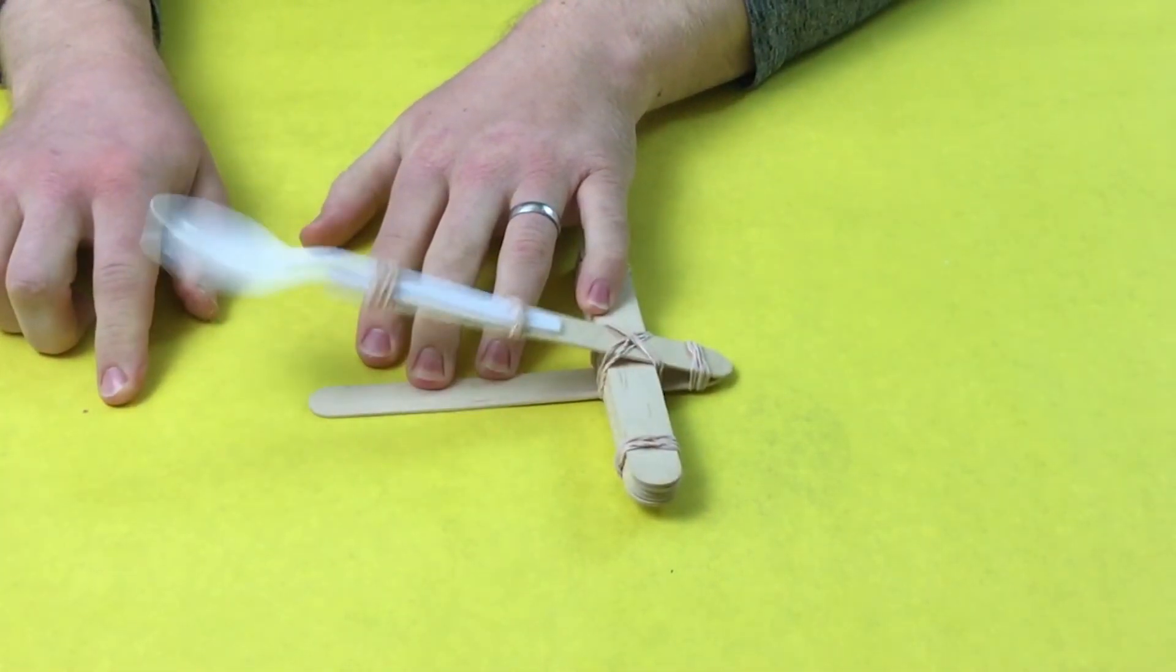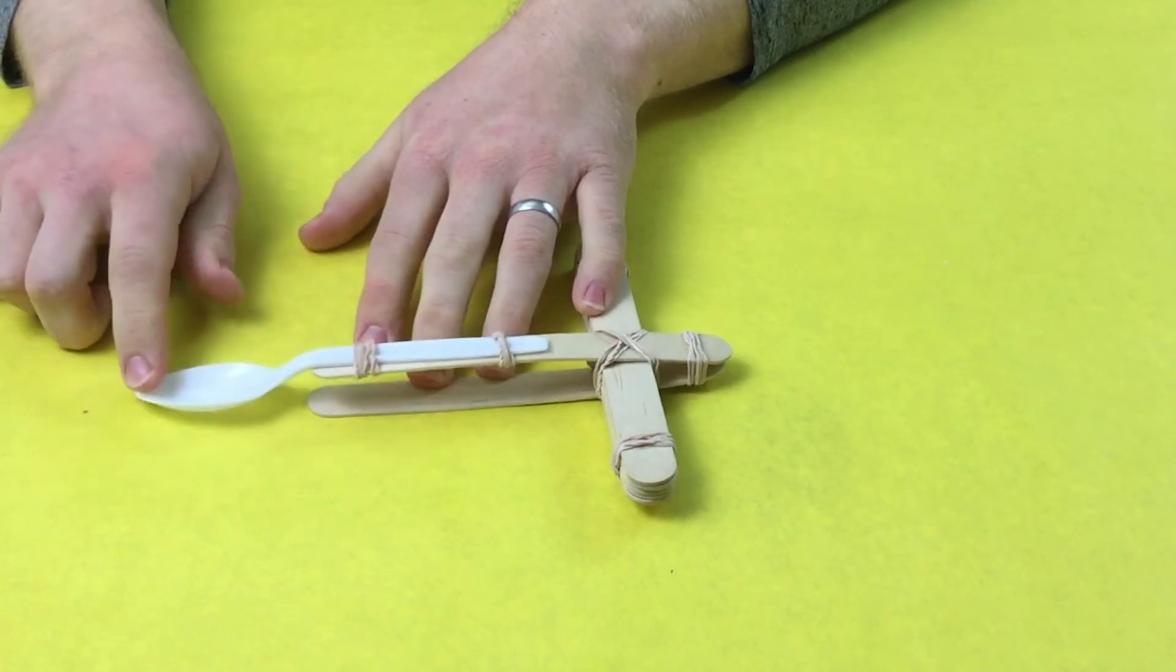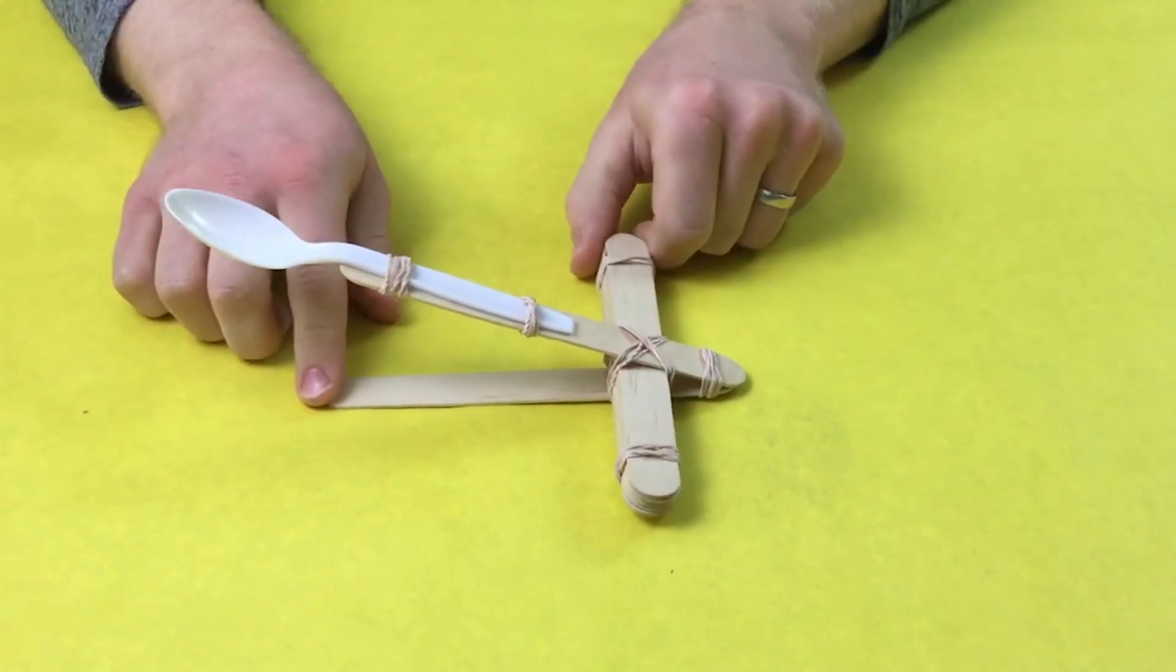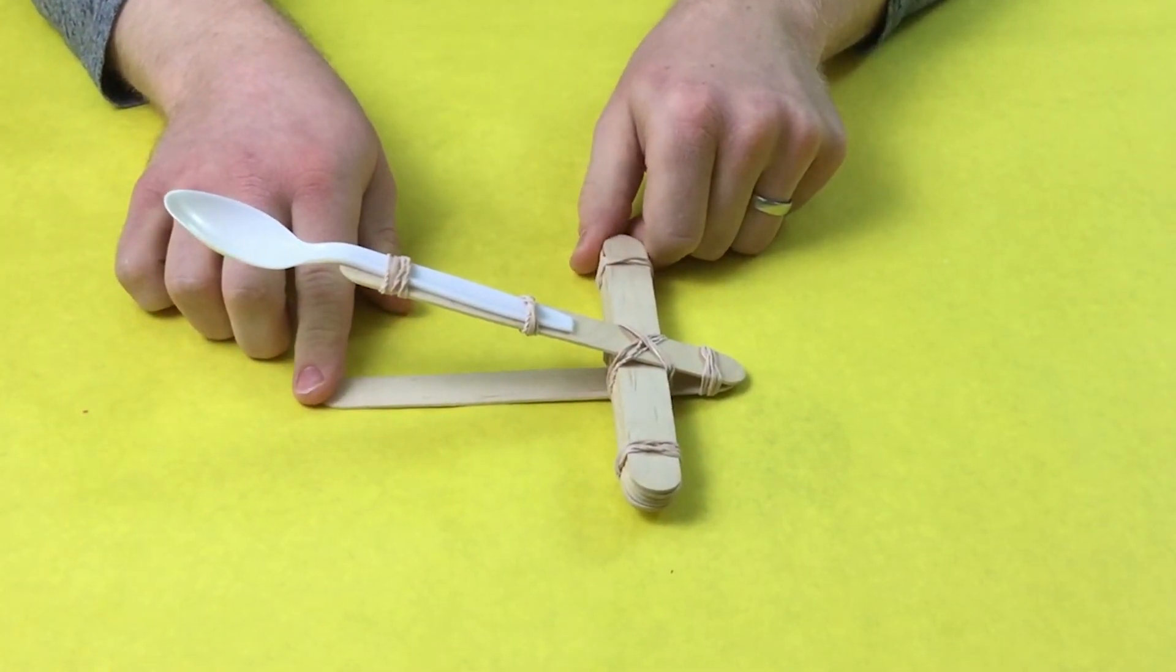And there you go, you've got a nice catapult ready for flinging M&Ms or popcorn or erasers. Just don't fling it at anybody.